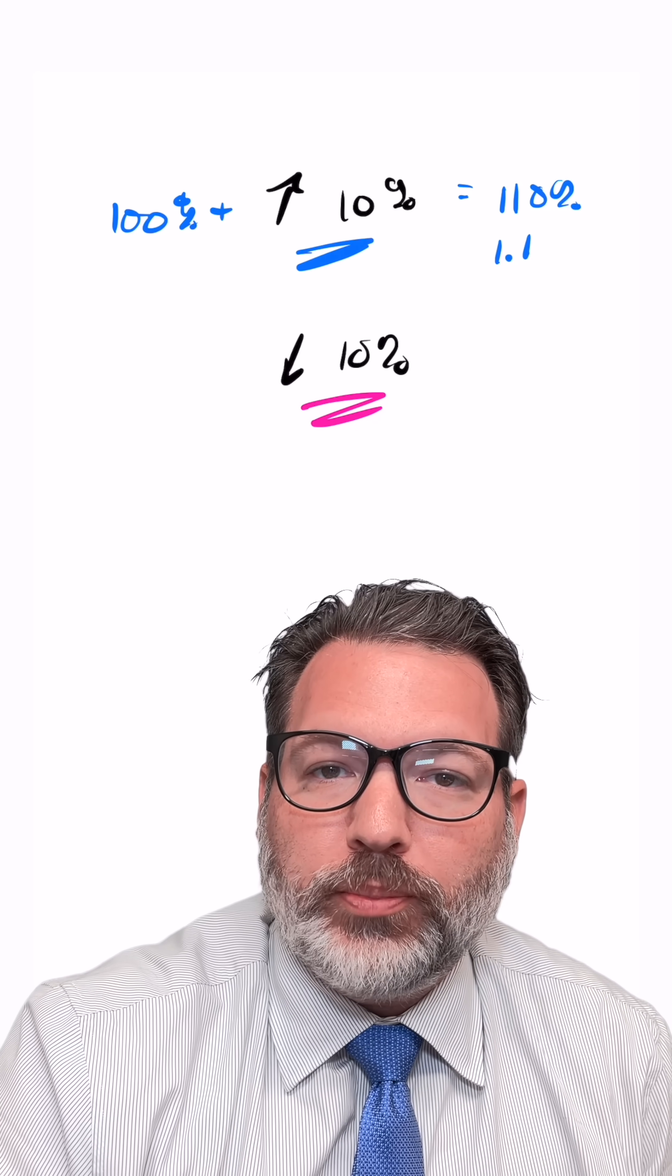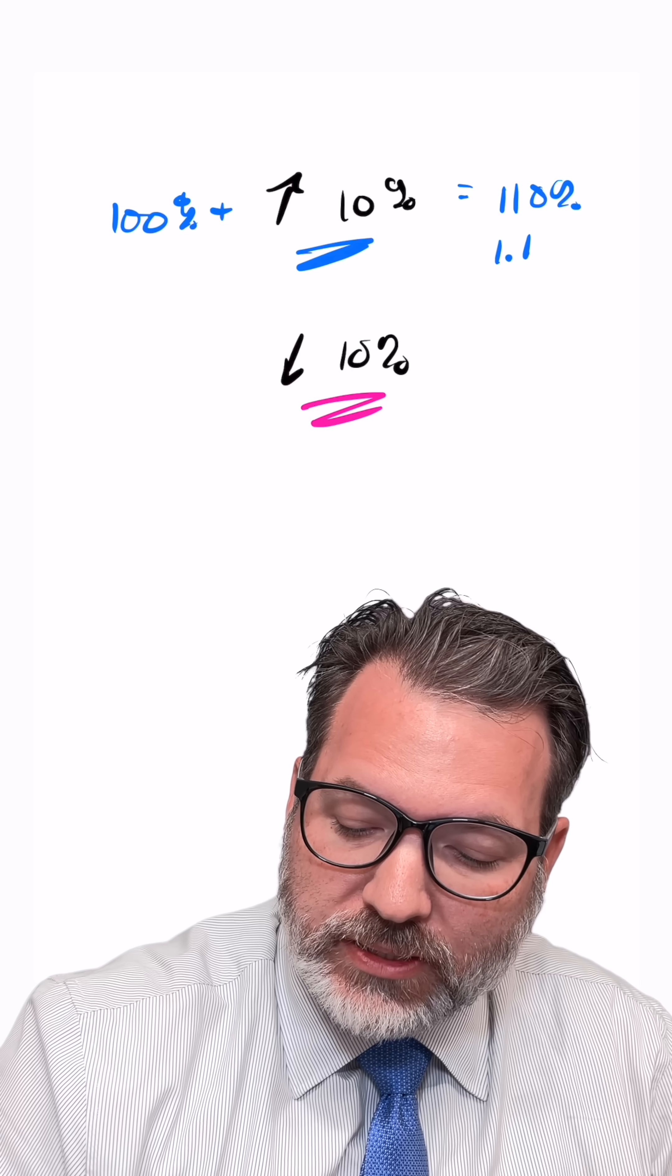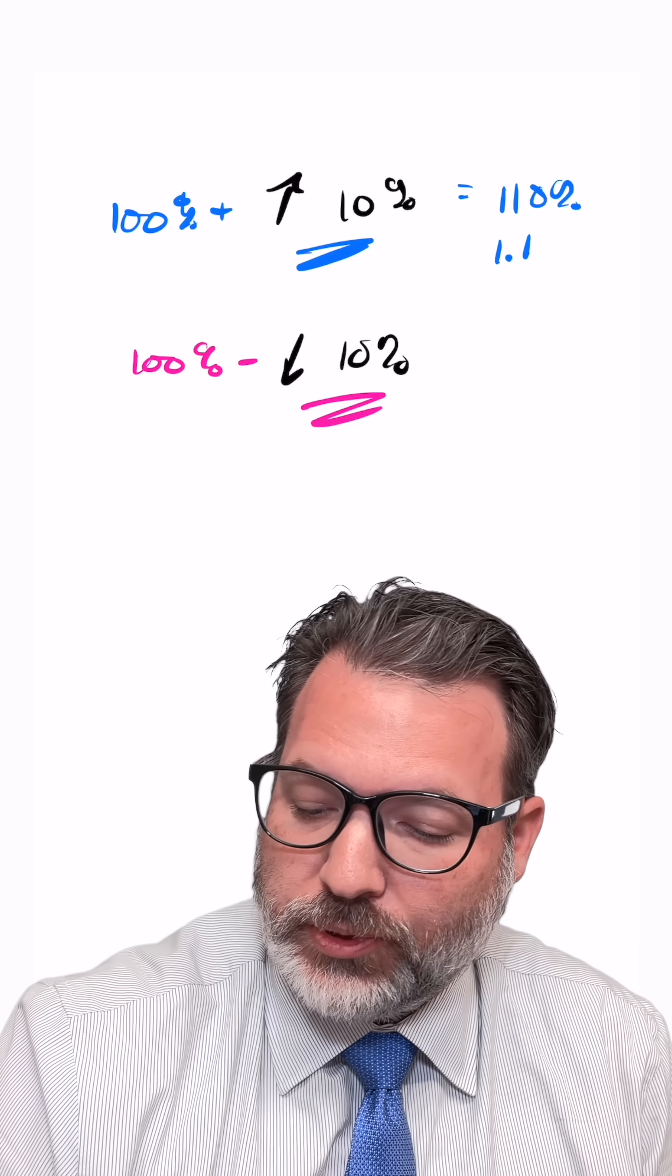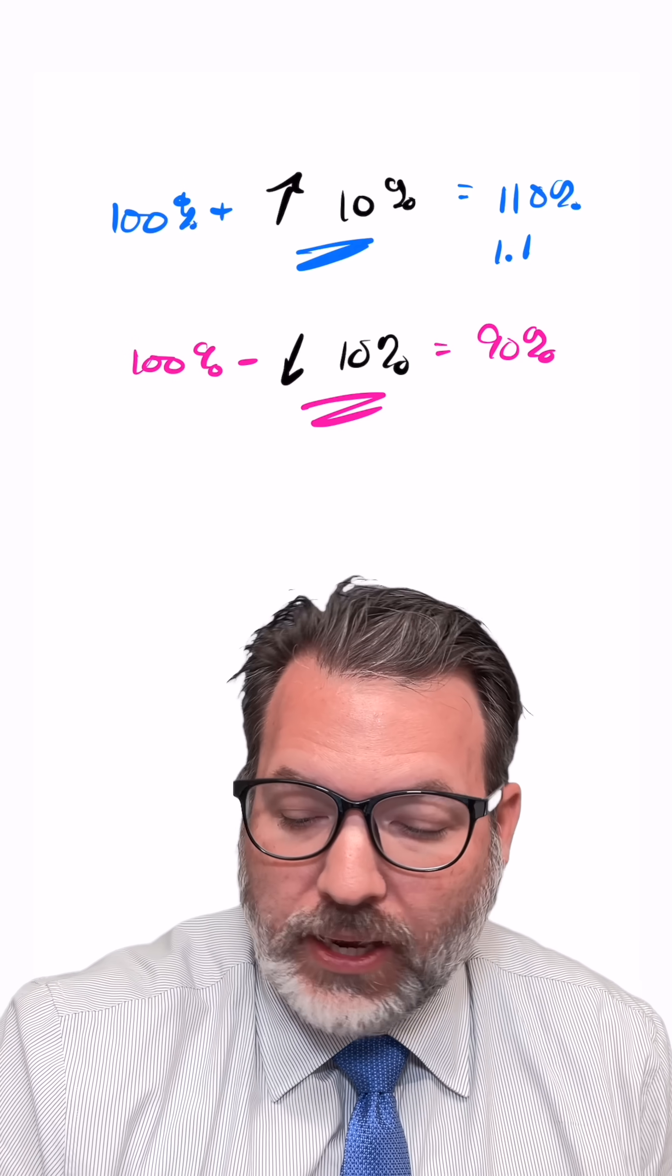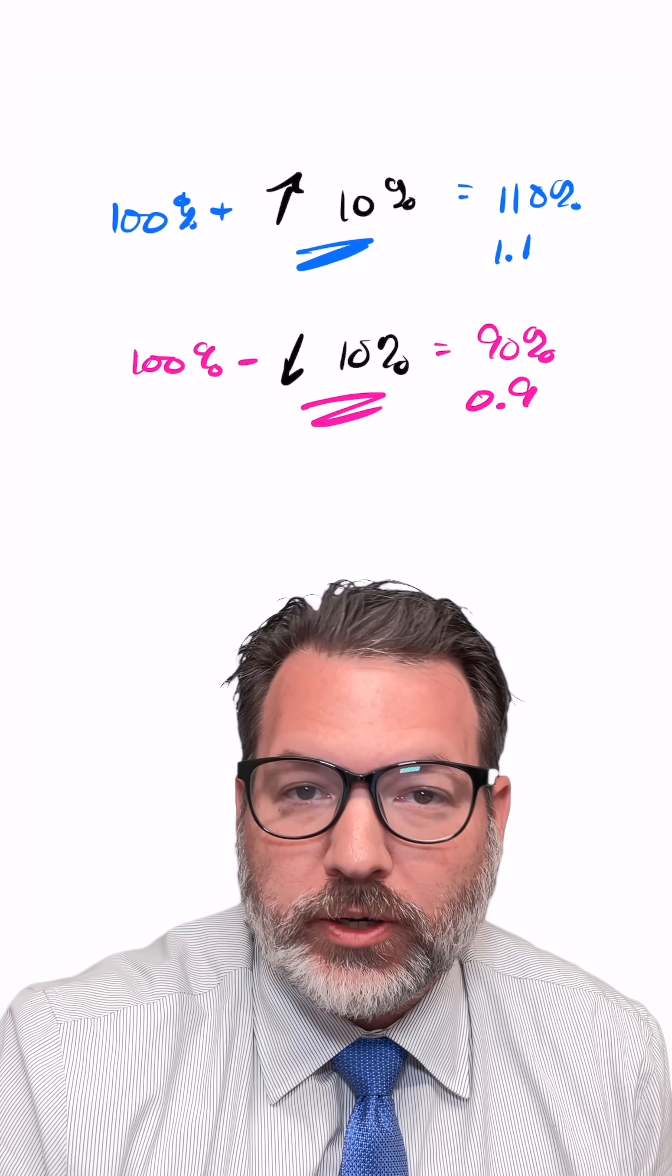Similarly, when we say something is down 10%, what we mean is that if you take the 100% something starts at and subtract away 10%, you're going to end up at 90% of where you started, or again, as a decimal, 0.9 times as much as what you started with.